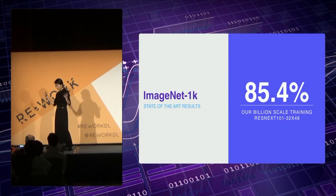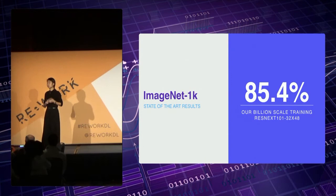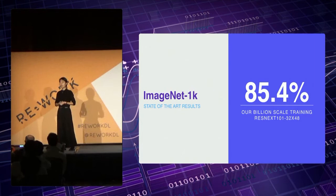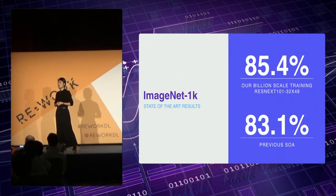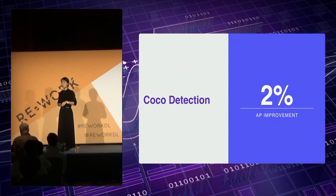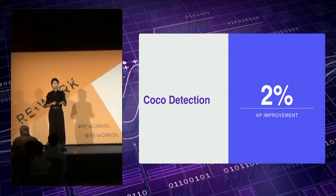We took our pre-trained model and evaluated on public benchmark datasets, and the results were beyond our highest expectations. On ImageNet — by far the most popular and accepted benchmark dataset — our largest model was able to reduce the recognition error to 14.6%, which is a relative 13% error rate reduction compared to the previous state-of-the-art. In addition to ImageNet, we also evaluated on the COCO Detection Image Challenge, which showed that by using hashtags for pre-training, we can improve the mAP by 2%.